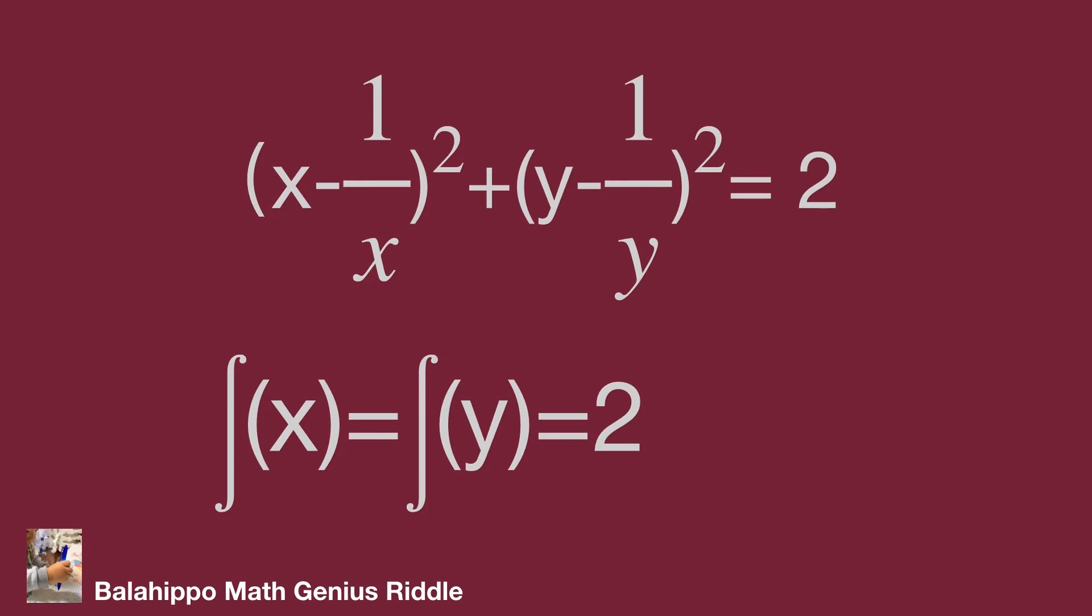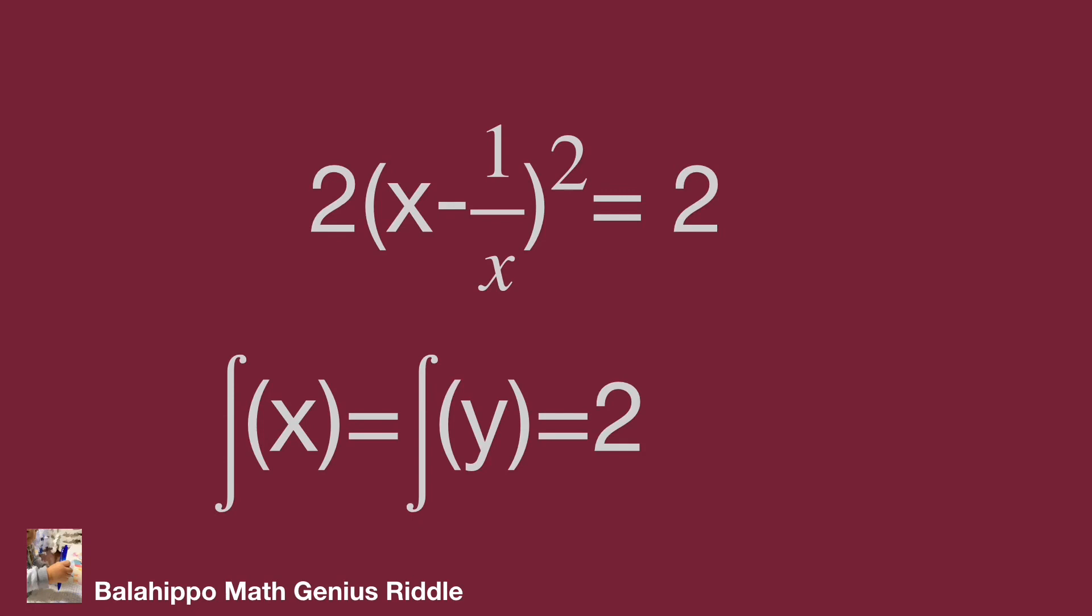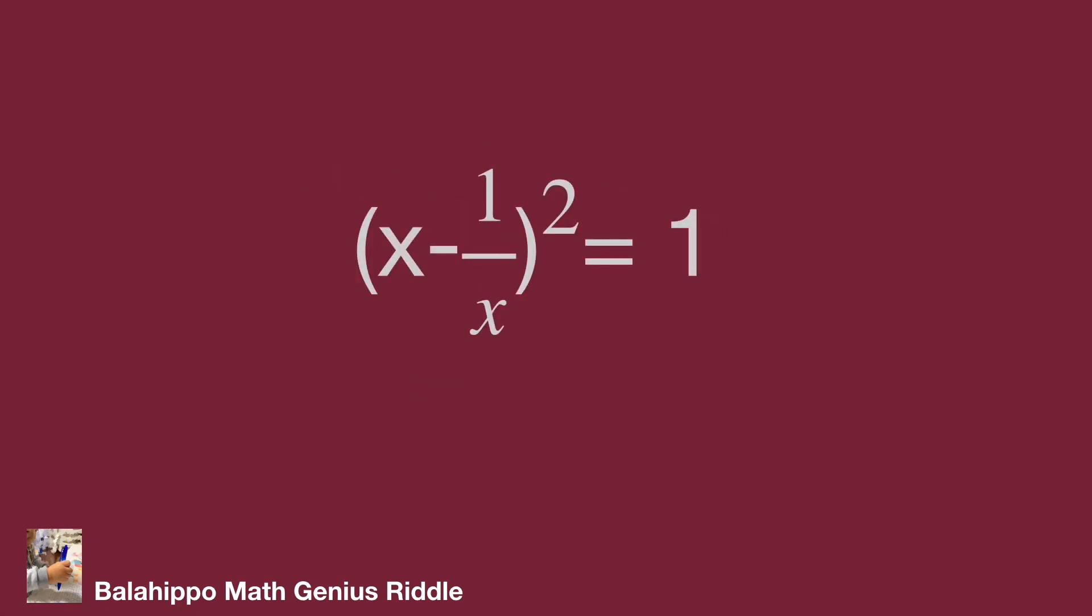We can treat these two items as the same items. It becomes 2 times quantity x minus 1 over x squared equals 2. So quantity x minus 1 over x squared equals 1.